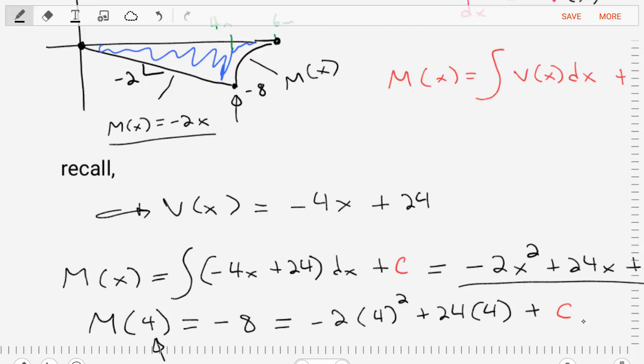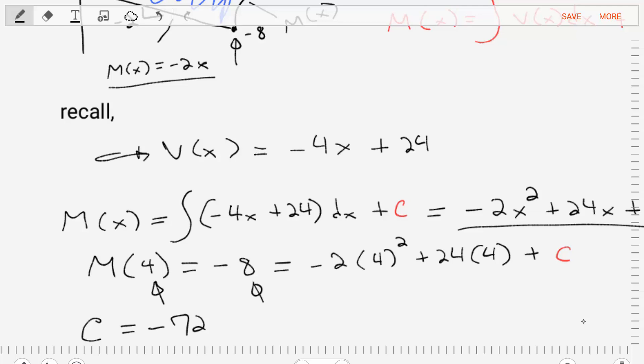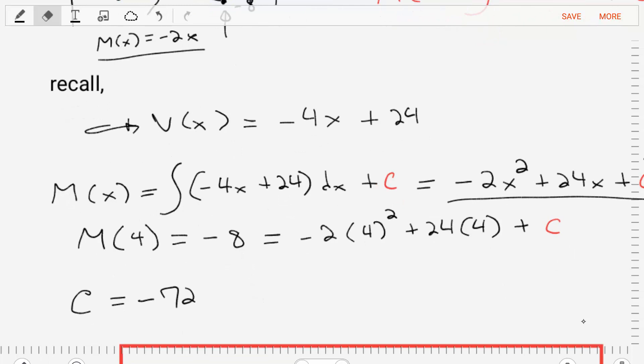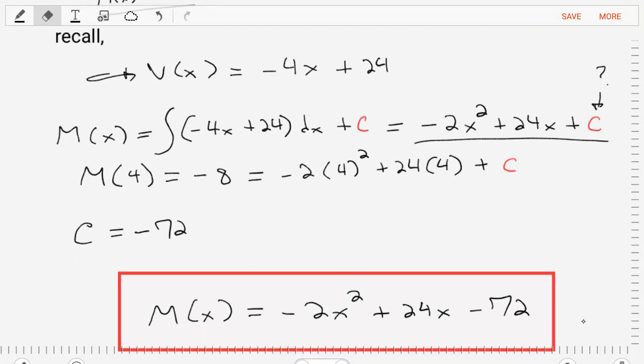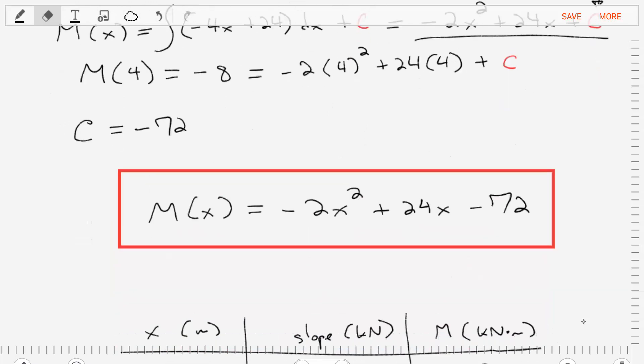If we go to our diagram, we'll know that it's at negative eight due to the previous line. It's at negative eight. So that's the actual value. Let's plug in the four meters into the rest of the equation. And we only have one unknown, c. We solve for that unknown and find that c is equal to negative 72. So our moment equation from four to six meters is negative two times x squared plus 24 times x minus 72.